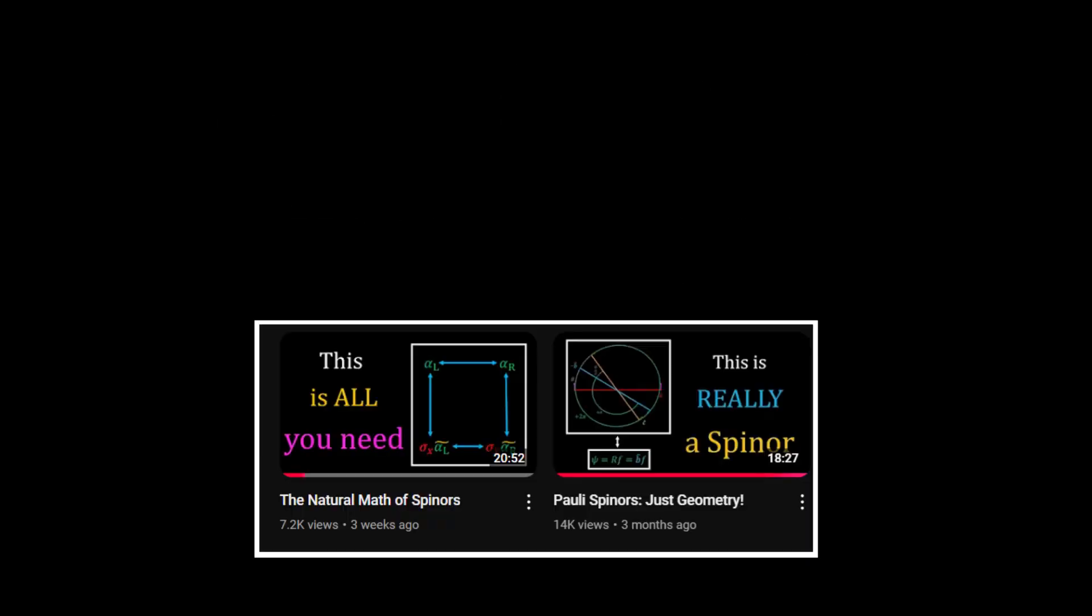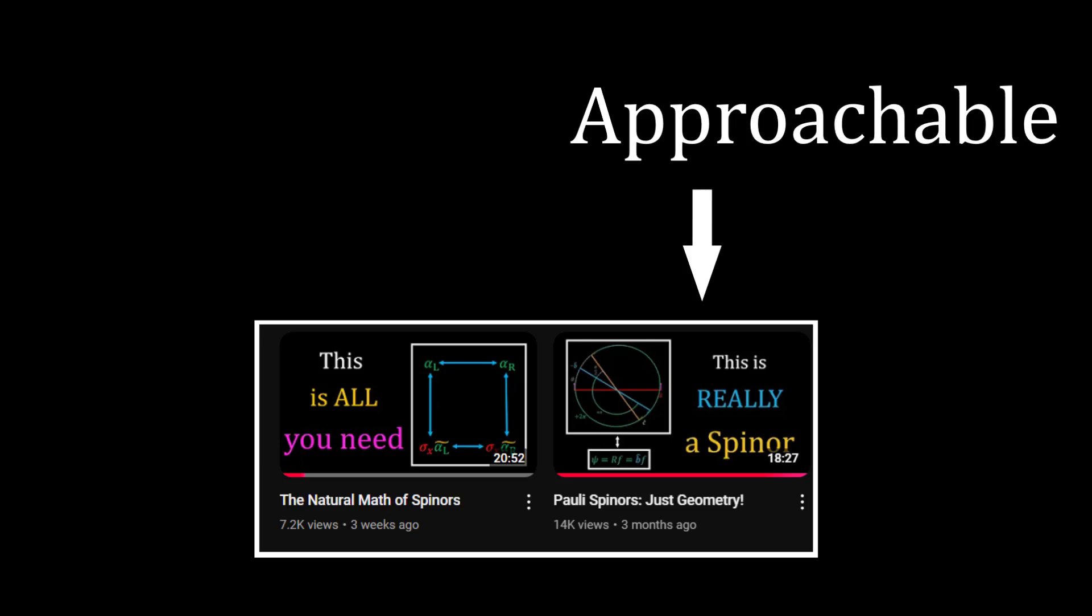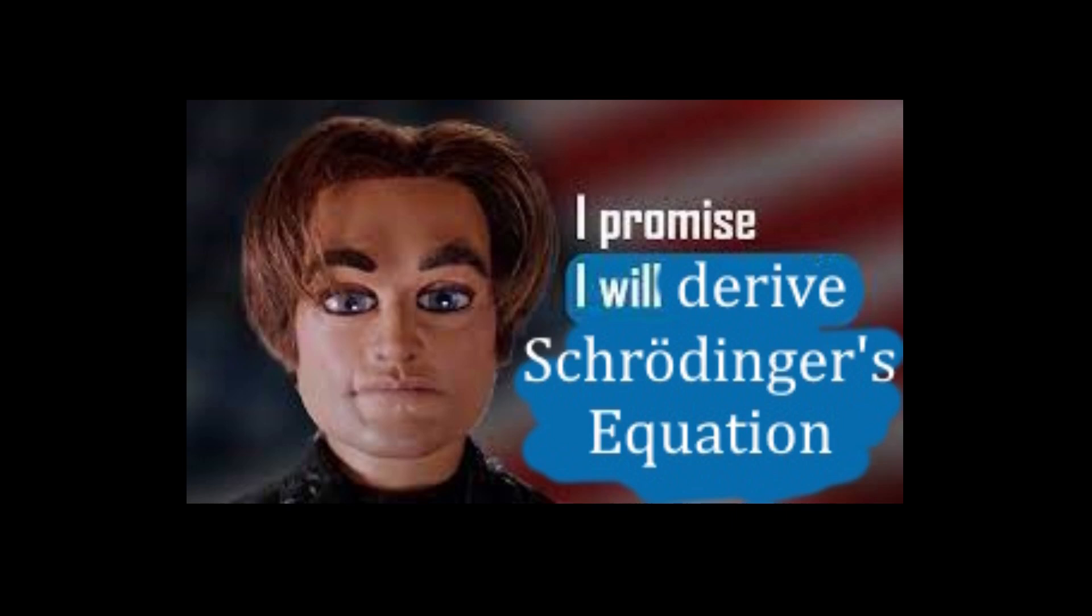So far, my videos on spin are very different. One is fairly approachable and shows the geometry of Pauli spinors, while the other is pretty much a wall of algebraic spellcraft. It is my hope to now give another approachable video explaining what spin is intuitively and geometrically. Then, using this geometric definition, I will derive the Schrödinger equation.